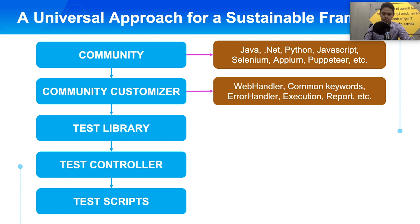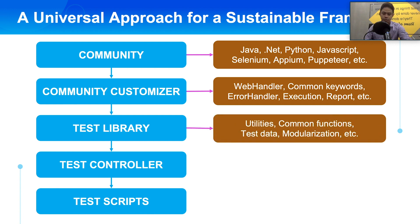In the test library layer, you need to build utilities to support testing activities throughout your project. Then you need to build common functions to be reused across projects, and also provide crucial capabilities such as test data management or modularization depending on your project's needs. The purpose of this layer is to enhance the productivity of the whole testing project and also provide core functions for all needs.